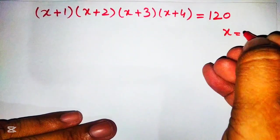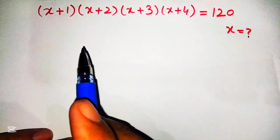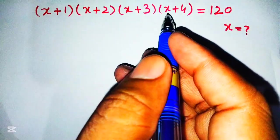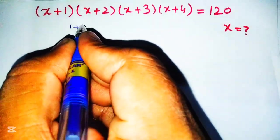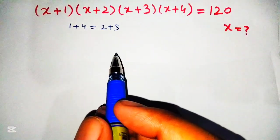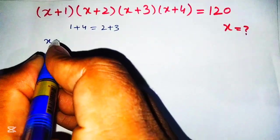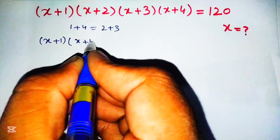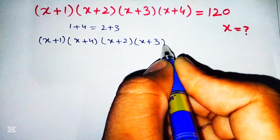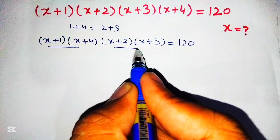We have to find the value of x. To start, we will rearrange the given terms using a trick to solve it easily. We can see that 1 plus 4 equals 2 plus 3, so we arrange these pairs side by side and get: x plus 1 into x plus 4 into x plus 2 into x plus 3, which is equal to 120.